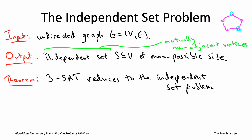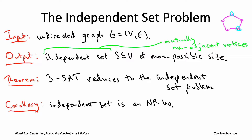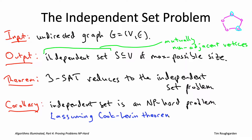As long as we're willing to take the Cook-Levin theorem on faith and assume that 3SAT is NP-hard, this reduction will show that independent set is NP-hard as well. As we saw in the previous video, once we know that independent set is NP-hard, the dominoes start falling — the clique problem, the vertex cover problem, the set cover problem, the maximum coverage problem, and the influence maximization problem are all NP-hard via easy reductions from independent set.